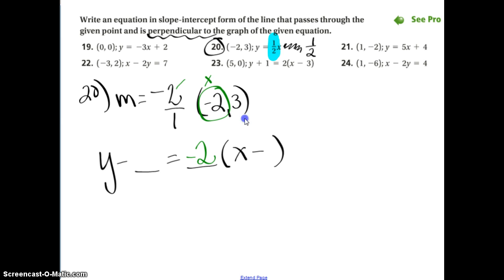Then, let's see. Here's my x. x goes with x, minus 2. Did you see what I did? Minus a negative makes a positive. And then, here's my y. So, I put that there.